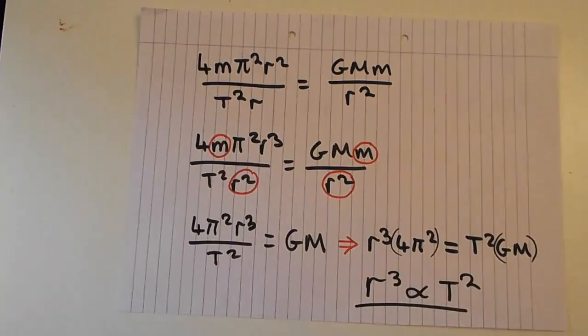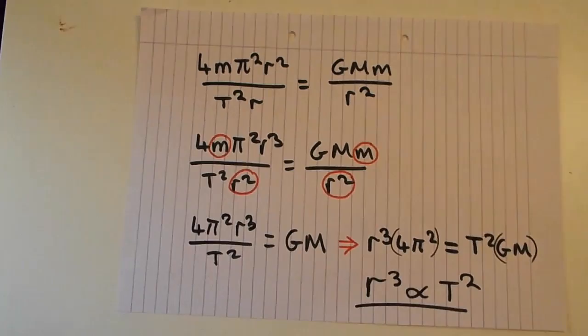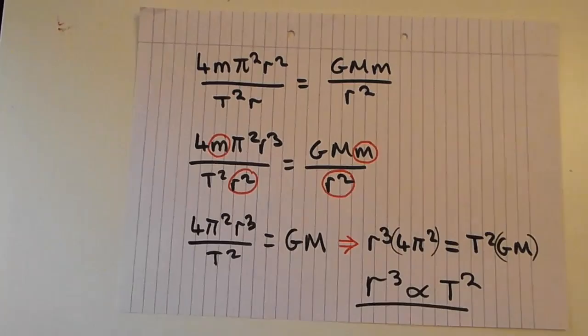Multiplying both sides by T² gives r³ × 4π² = T² × GM. Everything in brackets stays constant for a given orbit: 4π² is just a number, G is a constant, and M is the mass of the Sun which doesn't change appreciably. Therefore r³ is proportional to T² — the semi-major axis cubed is proportional to the period squared, which is Kepler's third law.